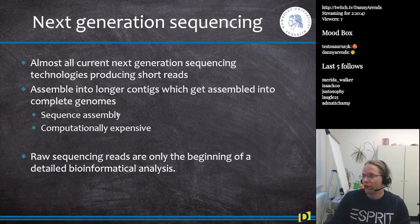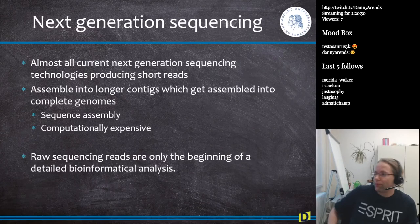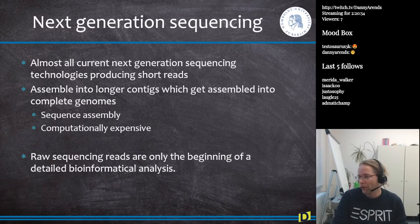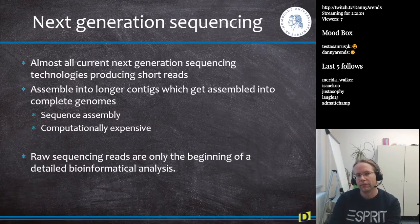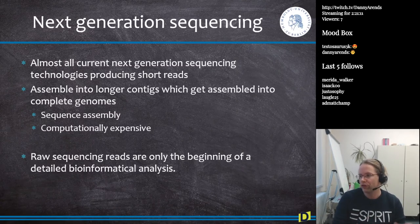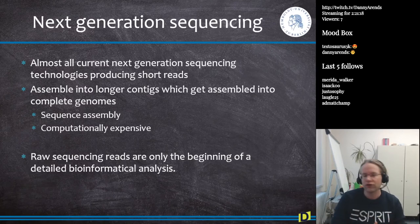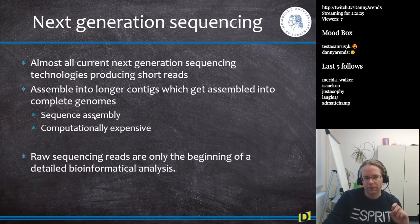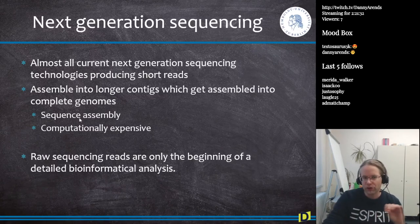Almost all current next-generation sequencing technologies produce very short reads, or relatively short reads. The only one that does really long reads is the one that uses the immobilized polymerase. Generally, people take these short reads and assemble them into things called contigs — continuous sequences — which then get assembled into complete genomes, assigned to chromosome one, chromosome two, and so on. This whole process is called sequence assembly, and it is computationally relatively expensive if you want to create a new genome.